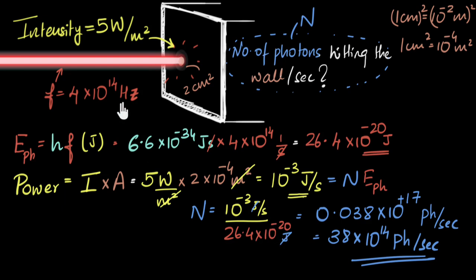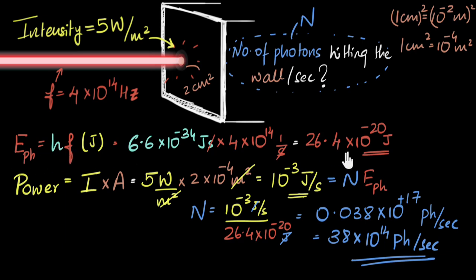Another question: what if I keep the frequency the same but increase the intensity? Because the frequency is kept the same, the energy of each photon stays the same — each photon carries the same energy. But I'm increasing the intensity, so I've increased the total energy input. Therefore there will be more photons hitting the wall. When you keep frequency the same and increase intensity, you increase the number of photons hitting the wall.